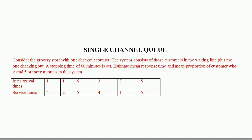Hello everyone. In this video I'm going to explain the single channel queue — this is a type 2 problem. The type 1 problem link is provided in the description box. The question here is: consider a grocery store with one checkout counter. The system consists of customers in a waiting line plus the one checkout counter. A stopping time of 60 minutes is set. We need to estimate the mean response time and the mean proportion of customers who spent five or more minutes in the system. Inter-arrival time and service time are given in the question.